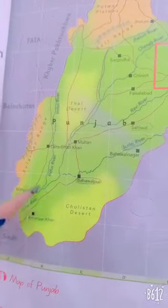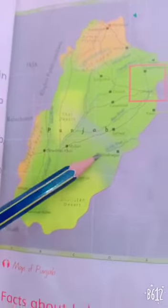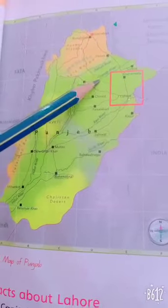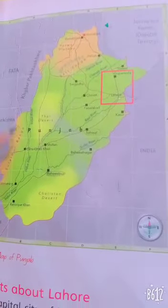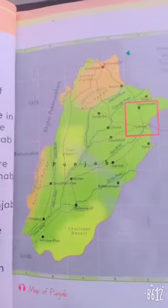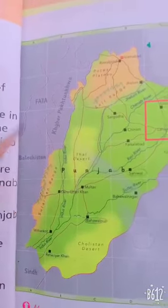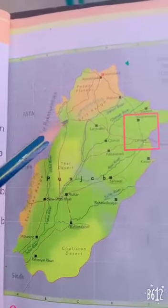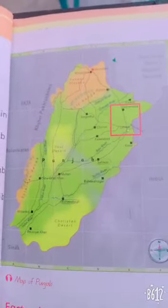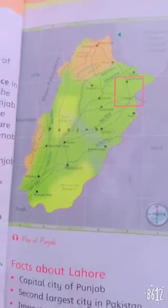As we all know, Punjab is the land of five rivers: Satluj, Ravi, Chenab, Jehlam and Indus. It also has two mountain ranges: Suleman Range and Salt Range. Punjab is also known for its prosperity, being the most urbanized region and the largest economy in Pakistan.